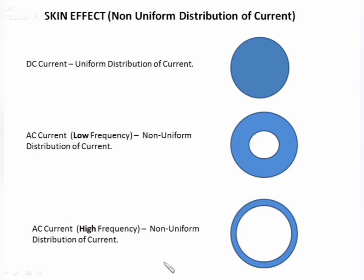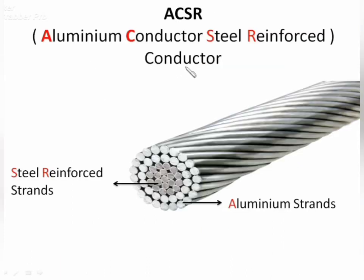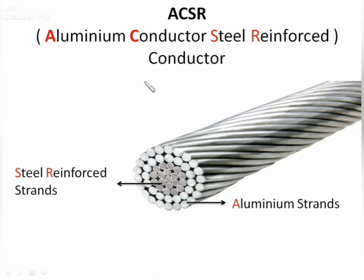It can be concluded that as frequency increases, the conductor is less utilized with respect to current flow. In ACSR conductor, the central steel strands are reinforced specially to provide strength to the conductor, and the major current flows through the aluminium strands. Hence, it can be said that skin effect has lesser contribution in ACSR conductor.